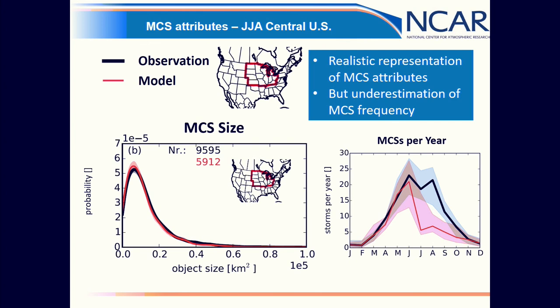Looking over the central US, we find a warm, dry bias. We think it's partially due to radiation being too strong and insufficient soil moisture. We're working on evaluating that and will report on it in a future talk.